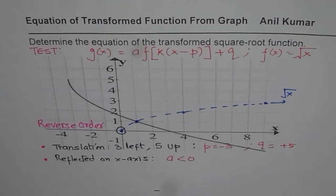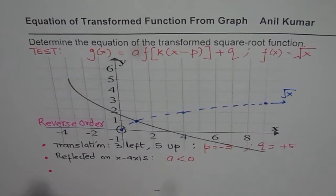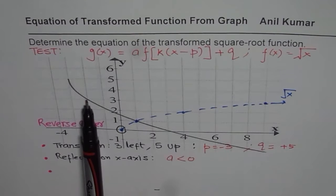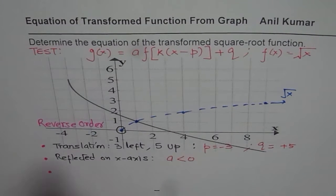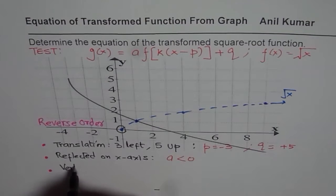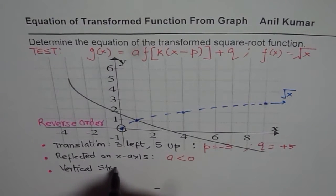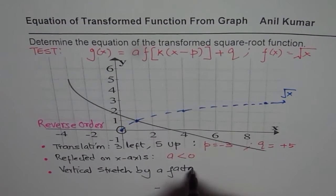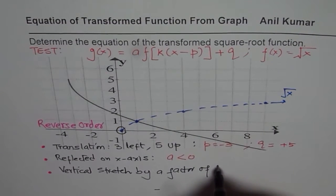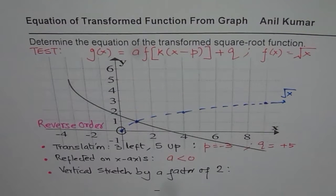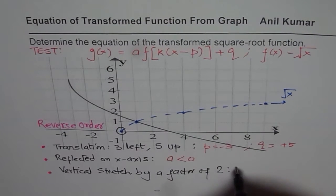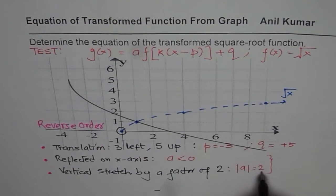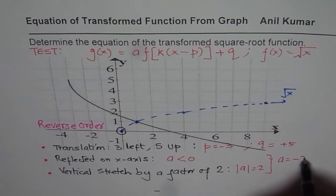Third, we observe there is a stretch factor: if you move one unit to the right, the graph goes two units down. So there is a vertical stretch by a factor of two, meaning |a| = 2. Combining the reflection and the stretch factor, we get a = −2.